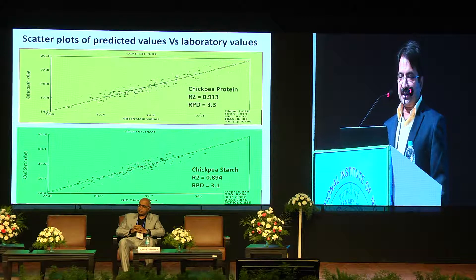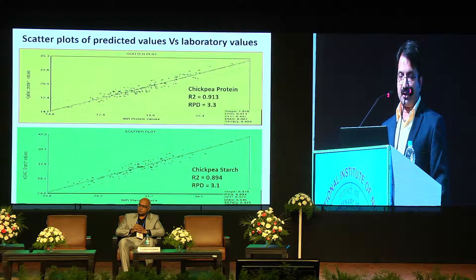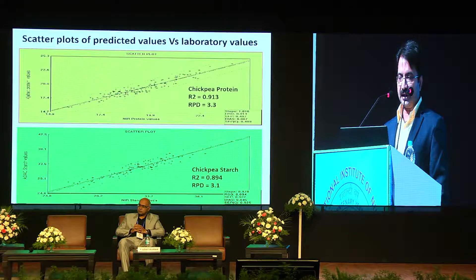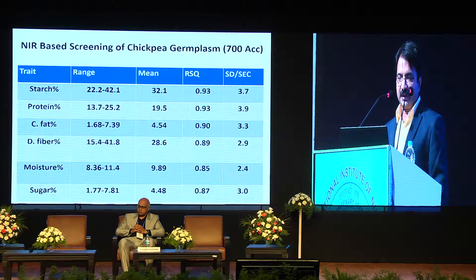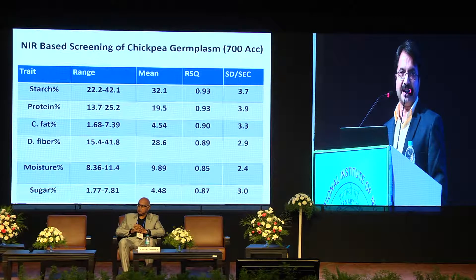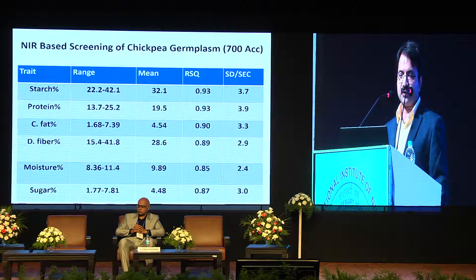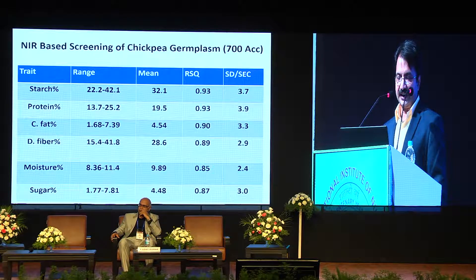For chickpea, we obtained an R² of 0.9 and RPD of 3.33 for protein. Similar results were obtained for starch. In the 700 accessions screened with this prediction model, we found a starch range from 22 to 42 percent, with similar ranges observed for other traits.